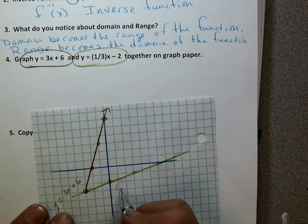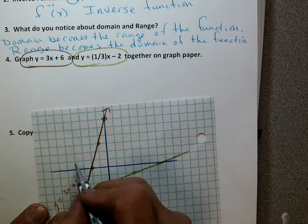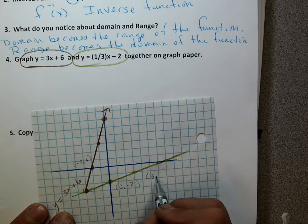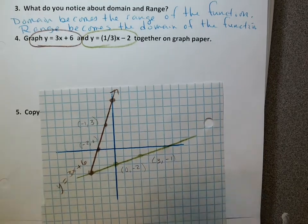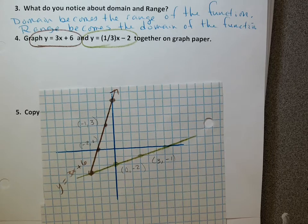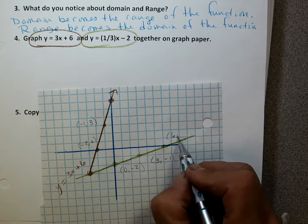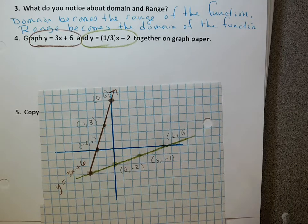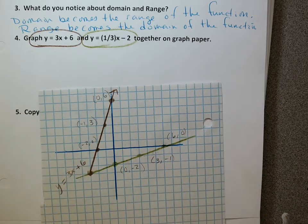Let's look at these points. The green line has a point at (0, negative 2); the brown line has a point at (negative 2, 0). This is a point at (3, negative 1) and its inverse is at (negative 1, 3). The points are reversed. This is the point at (6, 0), and the other has its point at (0, 6). They have to be inverses of each other because every single (x, y) has been switched to (y, x). These two graphs are indeed inverses of each other.